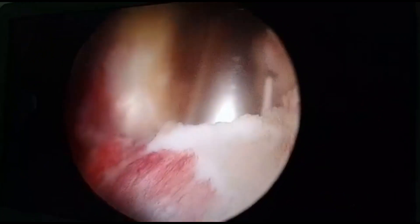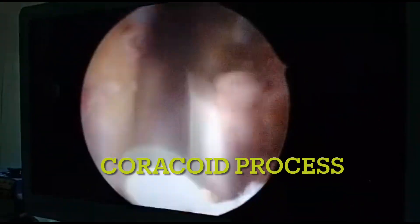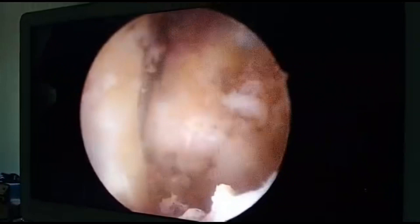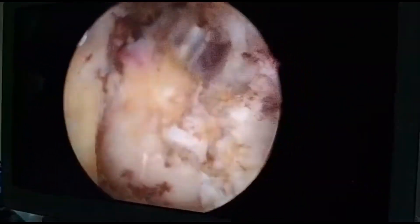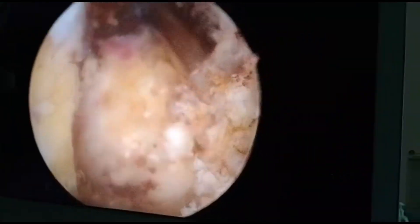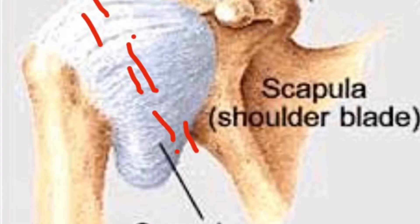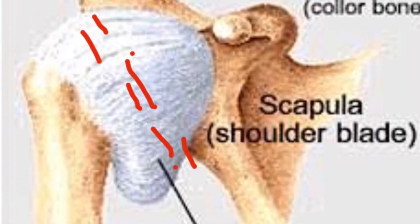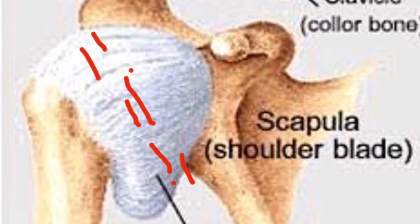We can see one muscle called subscapularis below and another muscle above. This is the step of rotator interval release, and after that we do something called capsular release.